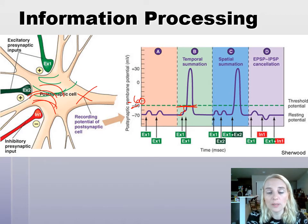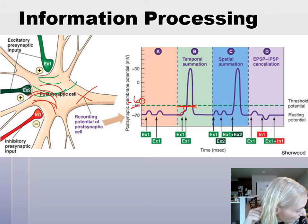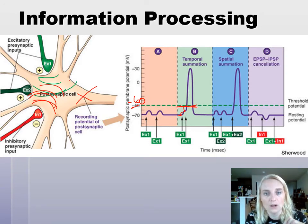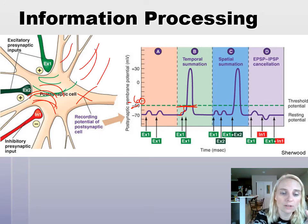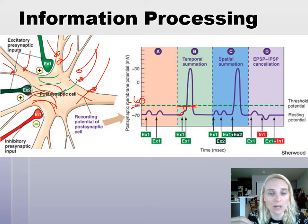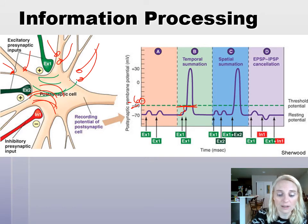That is our information processing: EPSPs and IPSPs, and how they summate at that postsynaptic cell. Here we're seeing three inputs, which adds complexity. Some neurons in our cerebellum — the little brain back by the occipital bone — have upwards of 200,000 synapses on the cell body and dendrites. Imagine 200,000 synapses, and the cell has to listen to all of that information coming in — some EPSPs, some IPSPs, some at spatial summation, some at temporal summation. What's the goal?